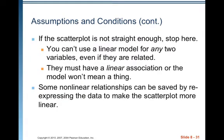If the scatterplot is not straight enough, stop here. You can't use a linear model for any two variables, even if they are related. They must have a linear association or the model won't mean a thing. Some nonlinear relationships can be saved by re-expressing the data to make the scatterplot more linear, and we will talk about that later.